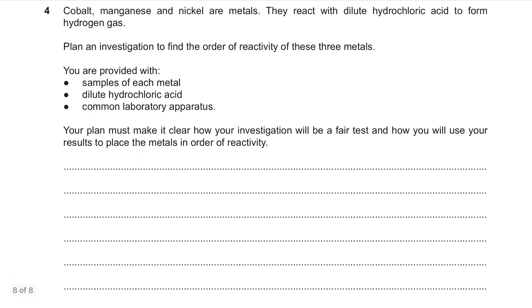Question 4. Designing an experiment. You need lots of practice for this. Try as many questions as possible and follow the format that I'm going to teach you now. Cobalt, manganese and nickel are metals. They react with dilute hydrochloric acid to form hydrogen gas. Plan an investigation to find the order of reactivity of these 3 metals. You are provided with samples of each metal, dilute hydrochloric acid, and laboratory apparatus. Your plan must make it clear how your investigation will be a fair test and how you will use your results to place the metals in order of reactivity. First, state the method of the experiment. In this case, we need to add each metal to hydrochloric acid in a flask.